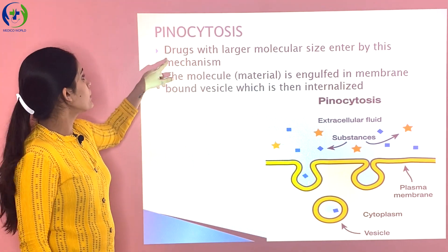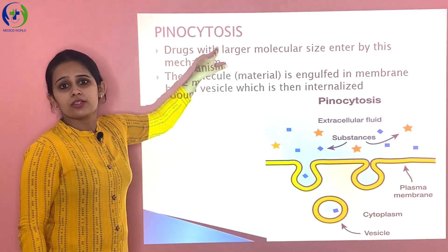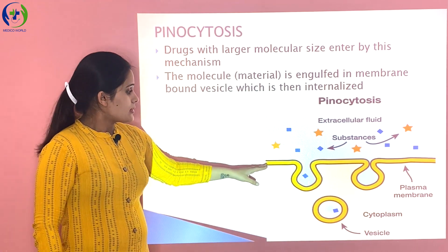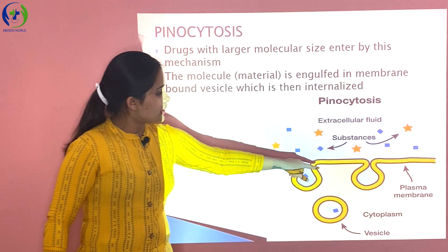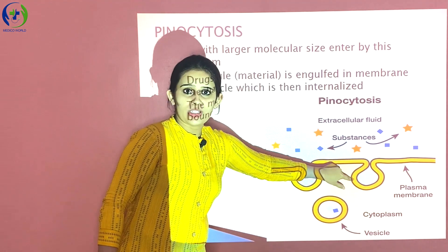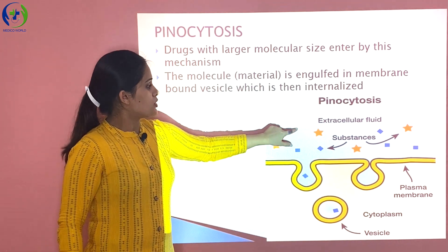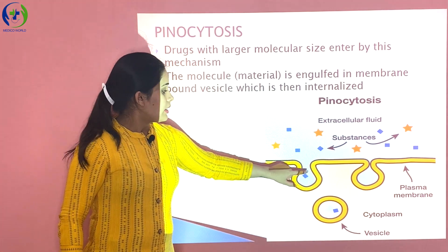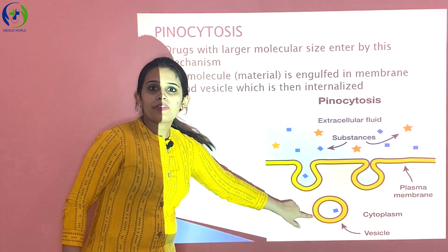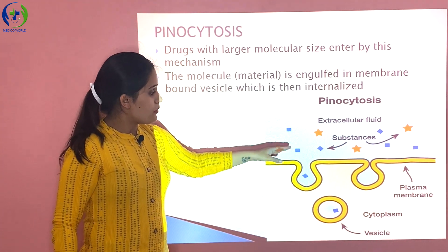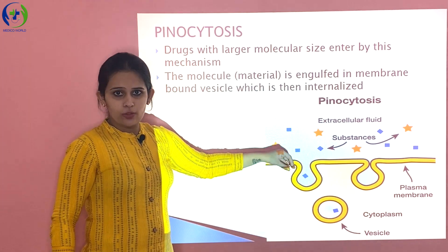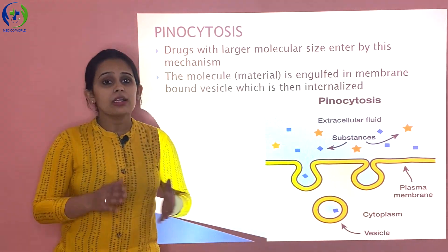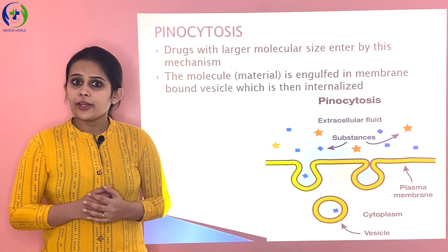For larger molecular sizes we study the next mechanism: pinocytosis. Pinocytosis is used where the drug size is larger — larger molecular size drugs are absorbed by this mechanism. The cell membrane gets invaginated into the cell, and the drug substance present in the extracellular fluid gets engulfed into this invaginated cell membrane. Later this cell membrane separates and forms a vesicle — the drug that was outside gets suspended in this invaginated membrane, a separate vesicle forms, and then this vesicle breaks down and the drug particle is further hydrolyzed.